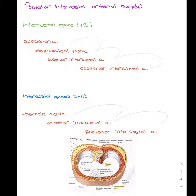Posterior intercostal arterial supply for spaces 1 and 2 starts at the subclavian artery, travels to the costocervical trunk, to the superior intercostal artery, and then to the posterior intercostal artery.